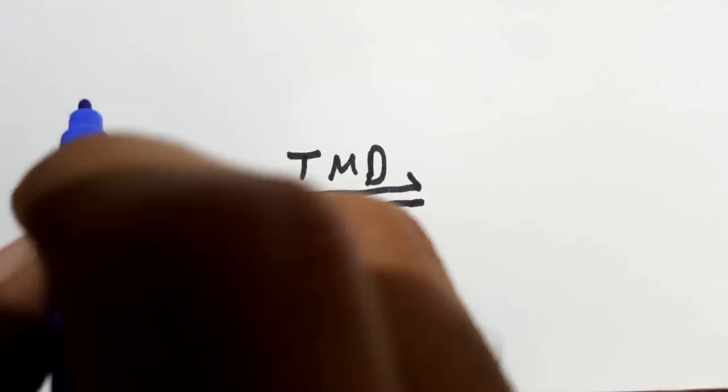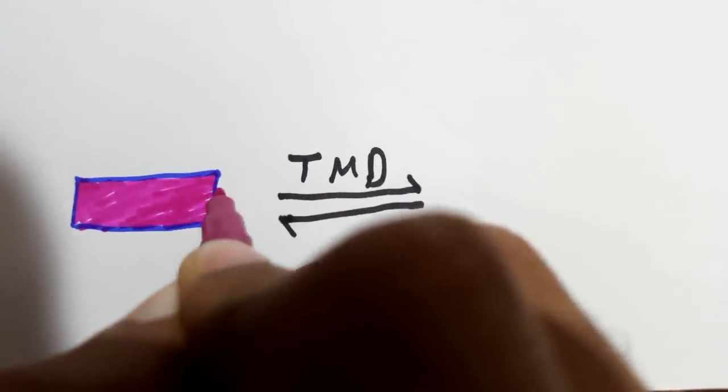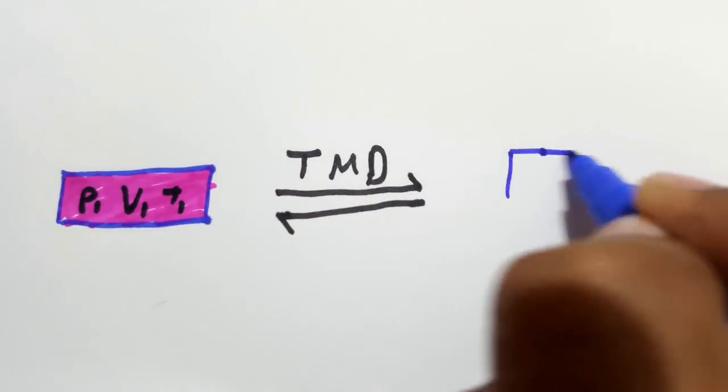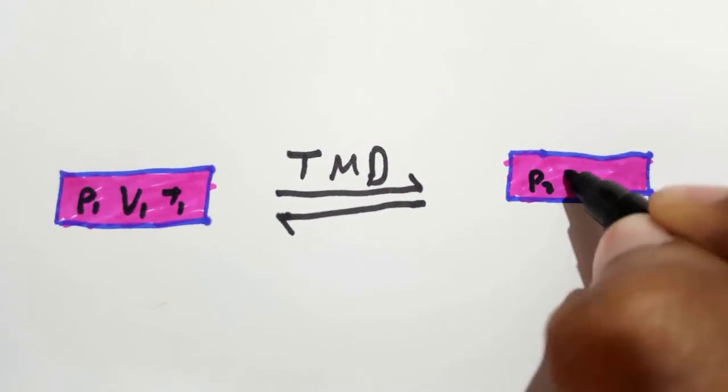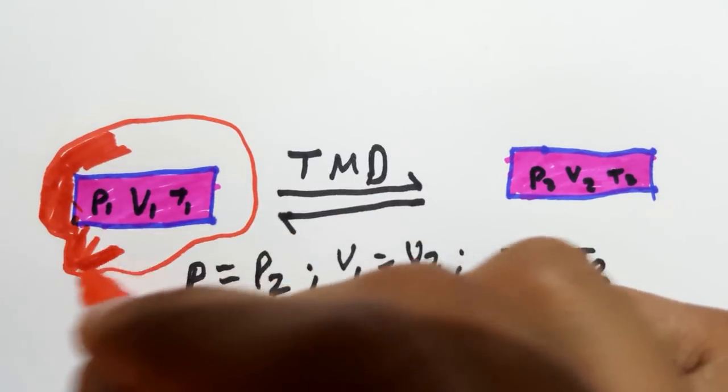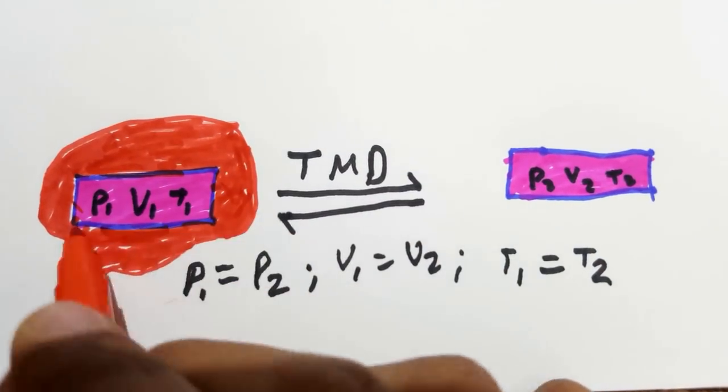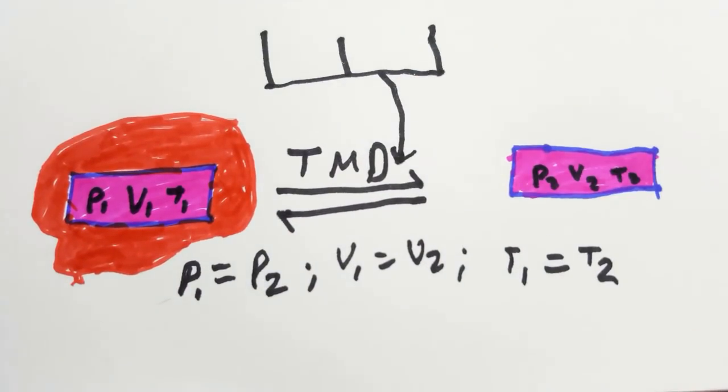Thermodynamic equilibrium is said to exist in a state where no change in any macroscopic property is seen when the system is isolated from its surroundings. There are three types of equilibrium that must be satisfied in order for a system to be in thermodynamic equilibrium.